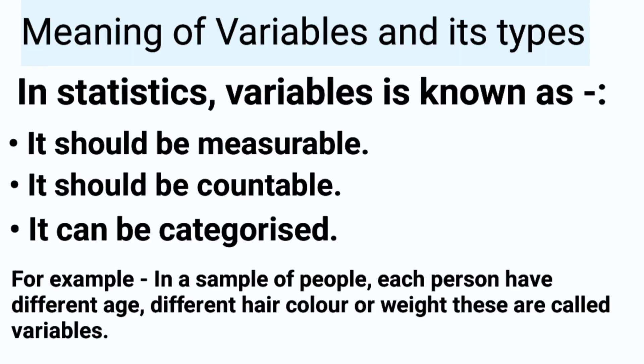Let's talk about the definition of variables. There are three things — if you see these three things in any other thing, then that is known as a variable. In statistics, it should be measurable. It should be countable — countable also in numbers. And it can be categorized.